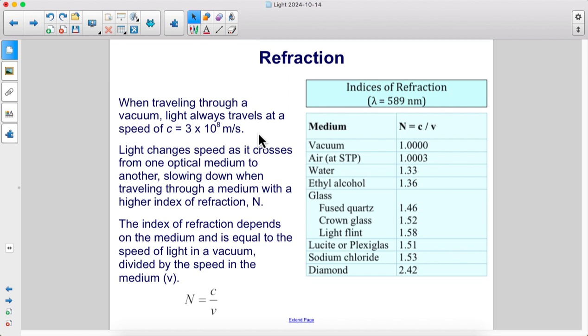Light changes speed as it crosses from one optical medium to another, slowing down when traveling through a medium with a higher index of refraction, N.